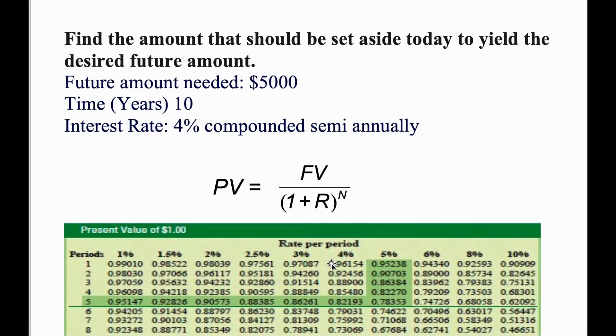Let's take a look at our question. The question states that the future amount needed is $5,000. It also tells us that time is 10 years and interest rate is 4% compounded semi-annually.